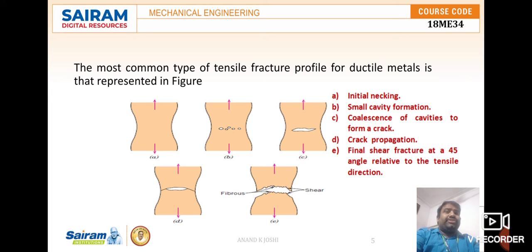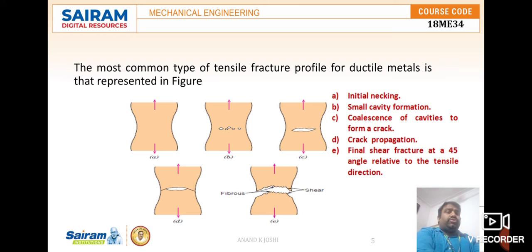The third stage is crack propagation. The small cavities link together to form an internal crack, which spreads across the material in a direction at right angles to the applied tensile stress. The crack remains stable and resists further extension unless the applied stress is increased. Eventually crack propagation proceeds toward the surface at approximately 45 degrees to the applied tensile stress.